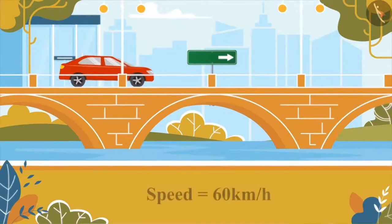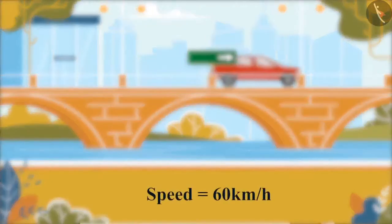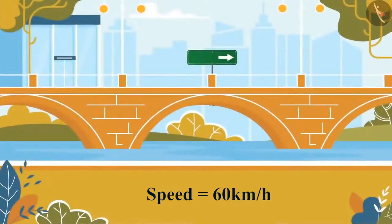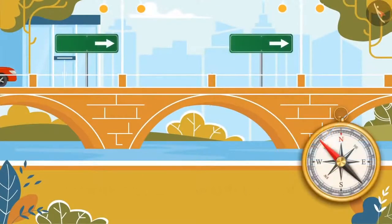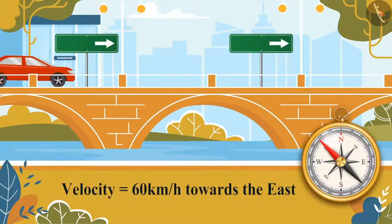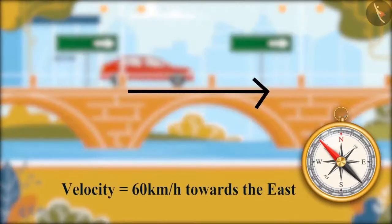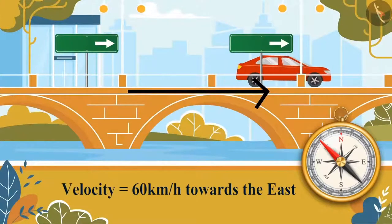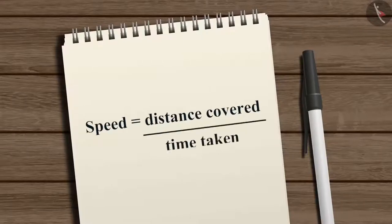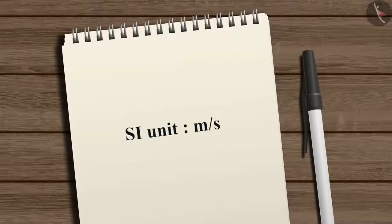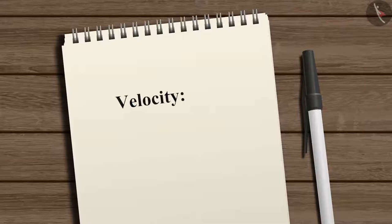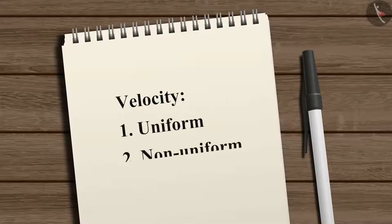If a car is going at 60 kilometers per hour, that is its speed. But when we say the car's speed is 60 kilometers per hour towards the east, it becomes velocity. Speed equals distance covered divided by time taken, with SI unit meter per second. Velocity's SI unit is the same. Velocity can also be uniform or non-uniform.